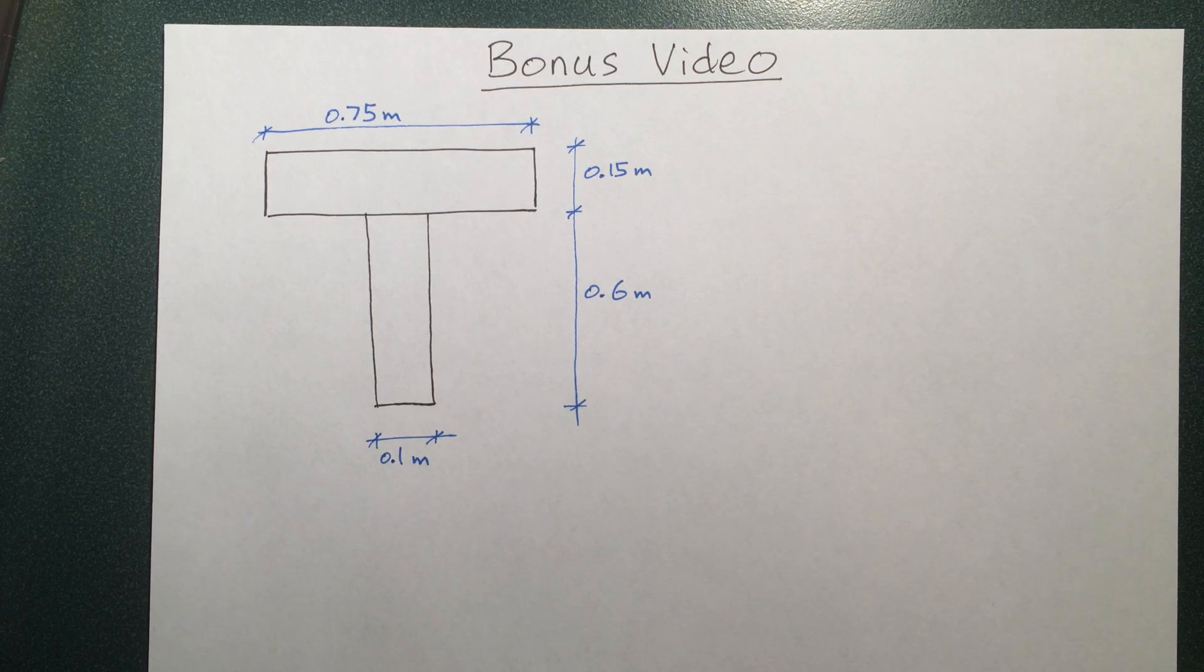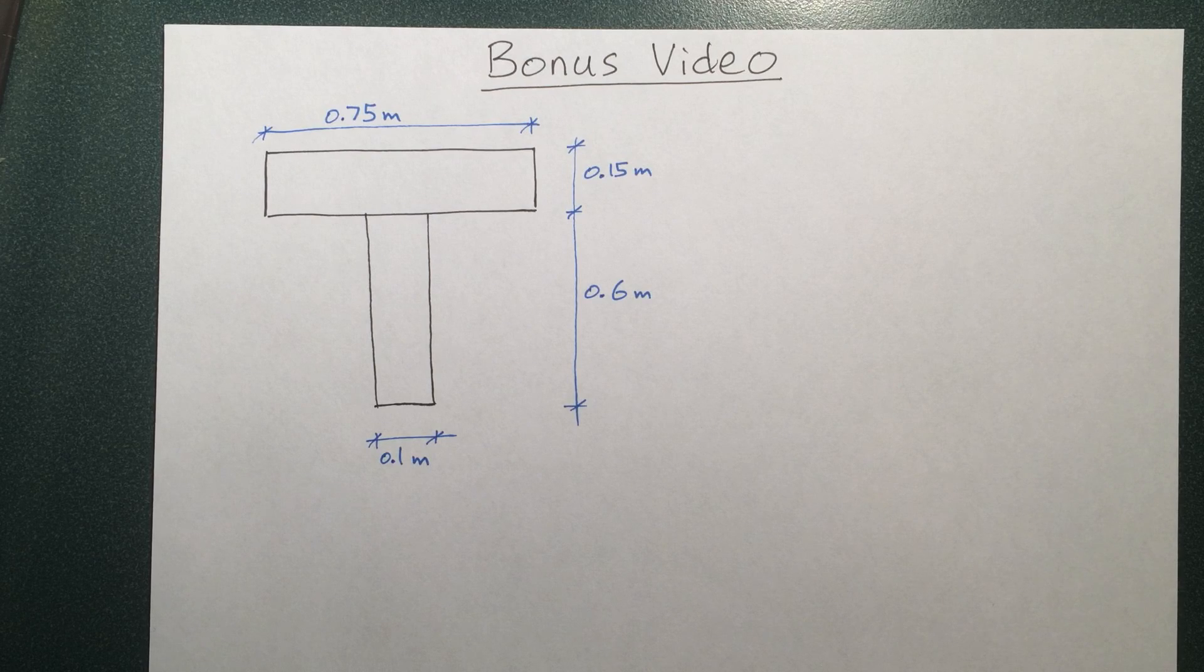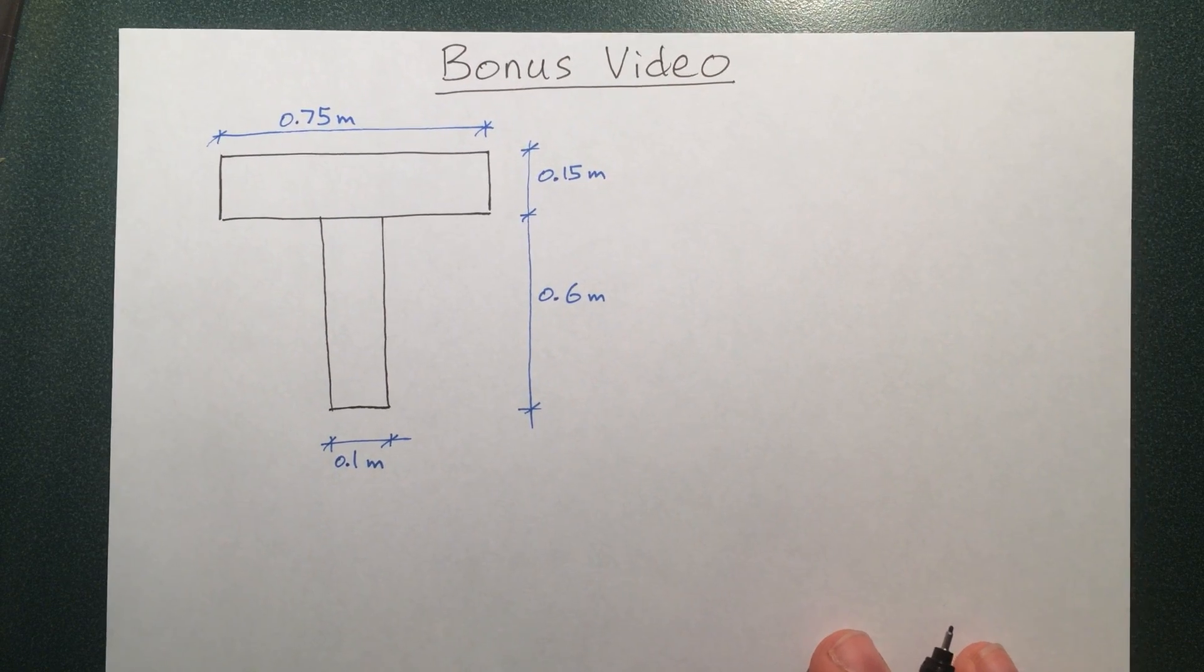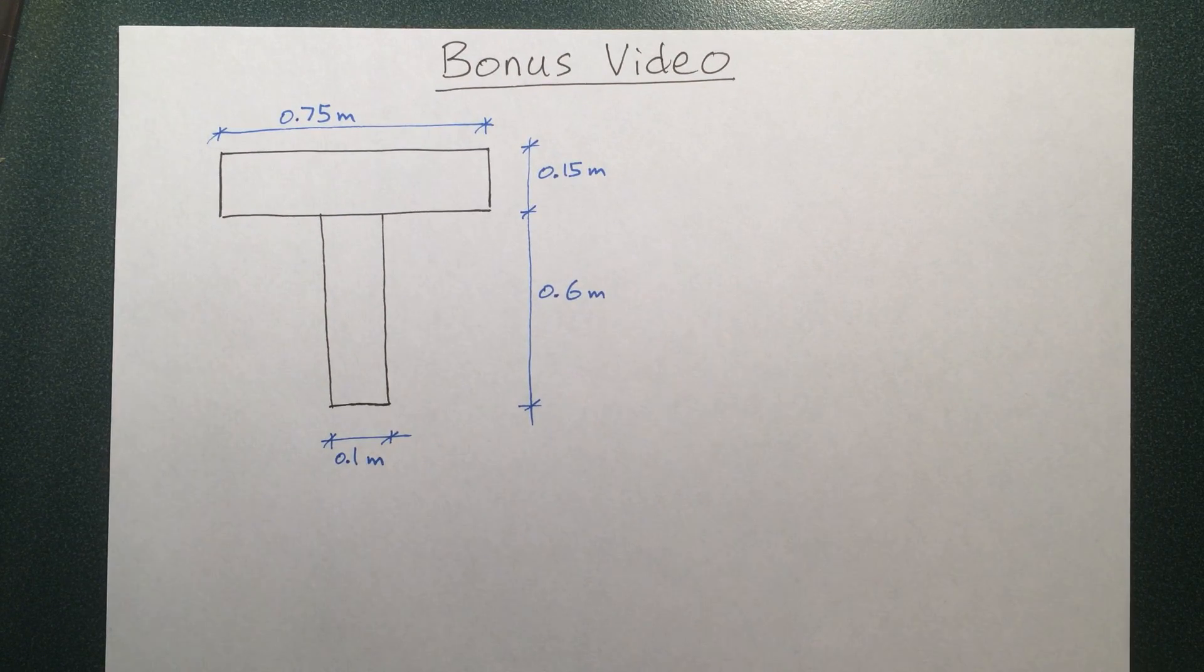Hi everybody, welcome to my bonus video on how to find the centroid and calculate the moment of inertia of an irregular cross section. In this case, I've taken the irregular cross section to be a T-shaped thing. In reality, you can have many other irregular shaped cross sections, but the principles used to find the centroid and moment of inertia are going to be exactly the same as the ones I'm going to develop here.